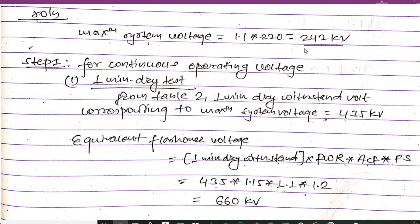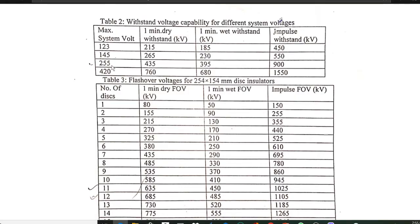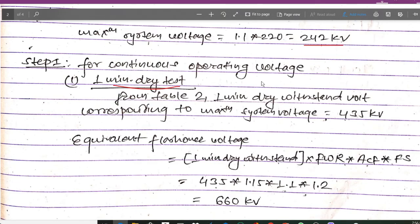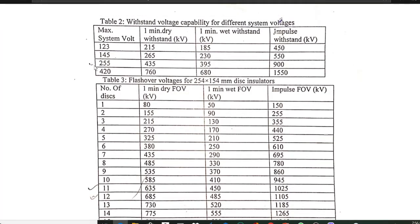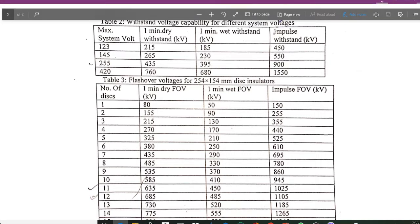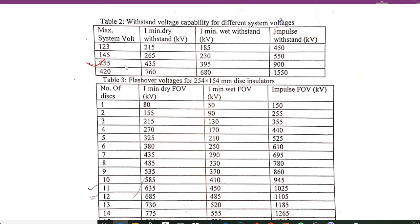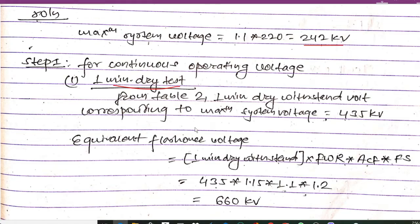In Step 1, for continuous operating voltage and one-minute dry test: from Table 2, the one-minute dry withstand standard voltage corresponding to maximum system voltage is 435 kilovolt. From the table, the maximum system voltage is 242 kV, and the next standard value above that is 255 kV. Corresponding to 255 kV, the one-minute dry withstand standard voltage is 435 kV, the one-minute wet withstand standard voltage is 395 kV, and the impulse withstand standard voltage is 900 kV.